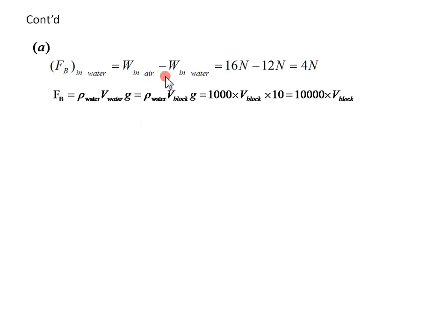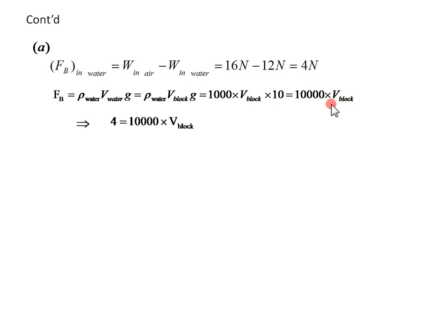For the water, the weight in air minus weight in water is 4 Newton, so buoyant force is 4 Newton. And buoyant force is density of water times volume of water times G — that is density of water times volume of the block times G. I have replaced volume of the block for volume of water because the object is completely below the surface of water. So 1000 times volume of the block times 10 gives 10,000 times volume of the block. These two numbers are equal: 4 equals 10,000 times volume of the block, and the volume of the block turns out to be 4 × 10⁻⁴ cubic meter.